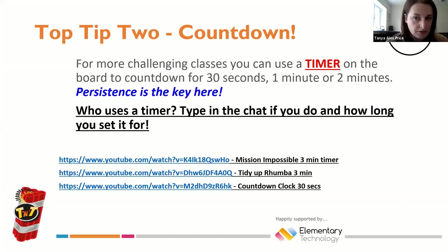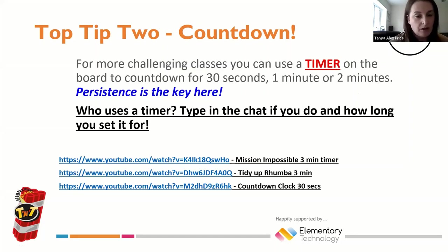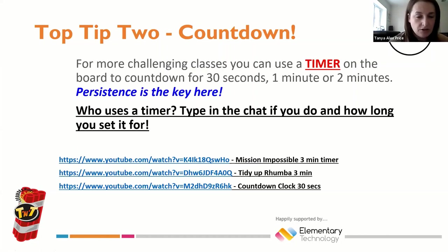For more challenging classes, you may need to use an actual timer on the board. There are various timer tools available — if you're a fan of Kagan there's a Kagan timer tool, or you can get a simple one from the internet. You could use a countdown clock of 30 seconds, a mission impossible timer of three minutes, or put whatever time you want. There are also fun options like a 'tidy up rumba' if you want the class to tidy at the end.